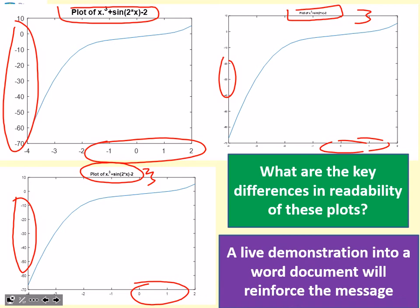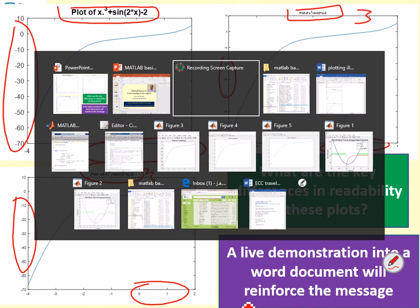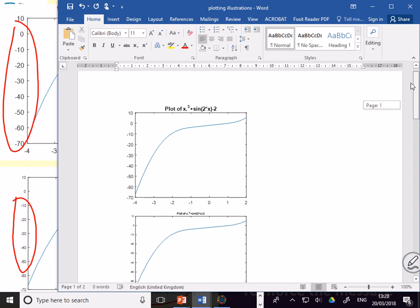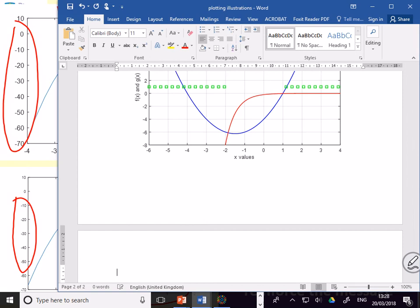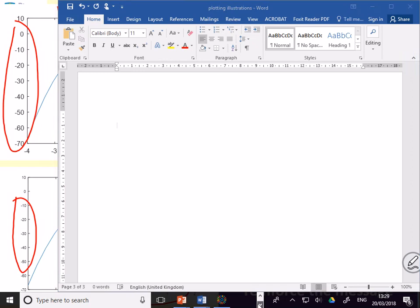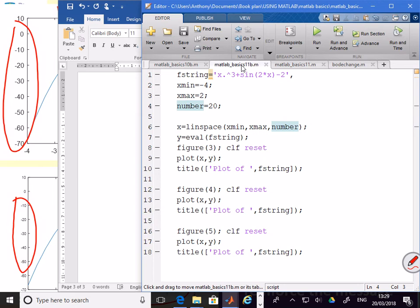So what we're going to do now is a live demonstration so that you can see how these differences arose. So first of all, we'll open our plotting window. And you can see here we've got the same three figures copied into Word. So you can see you get the same result. What I'm going to do is go down here, get a new page, and we'll use this new page to demonstrate the point. So next, we'll go to MATLAB. And we'll go to MATLAB Basics 11b. So this basically produces this figure in three different sizes. Figure 3, Figure 4, Figure 5. So let's just run it.